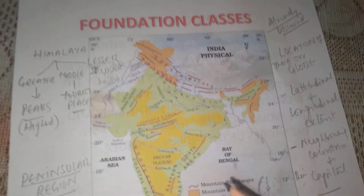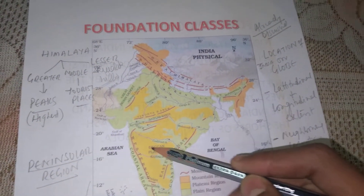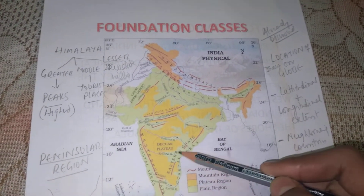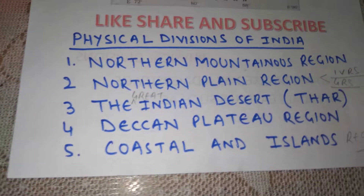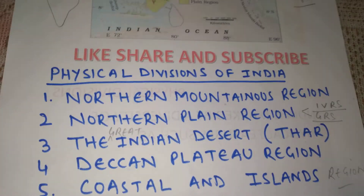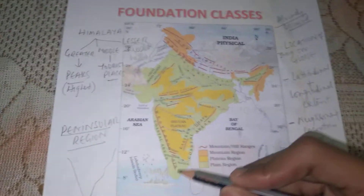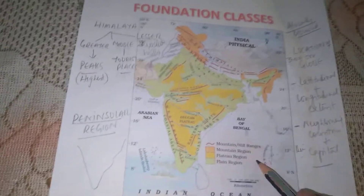Our fourth point is the Deccan Plateau region. This yellow part is the plateau region, which is the Deccan Plateau region.